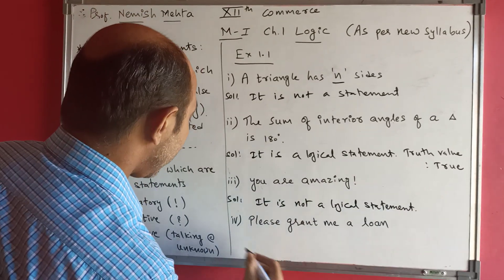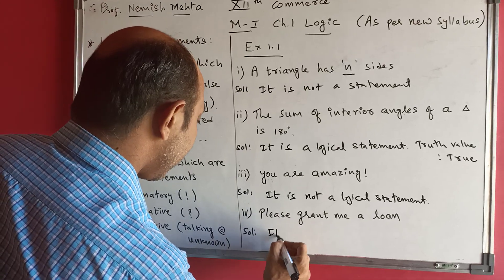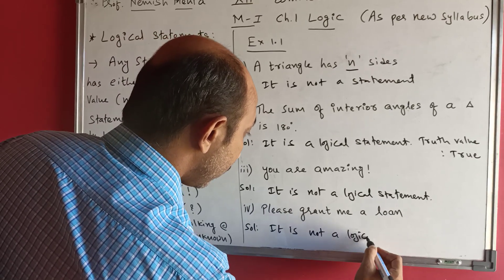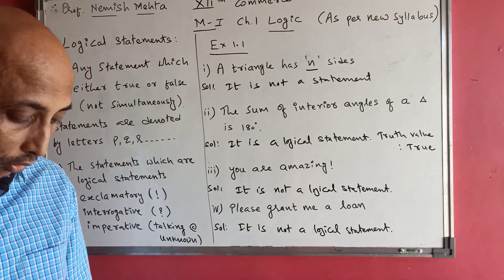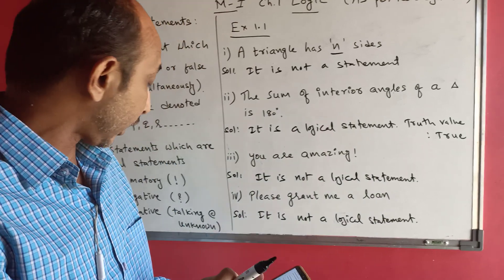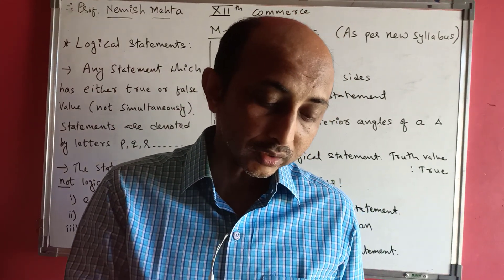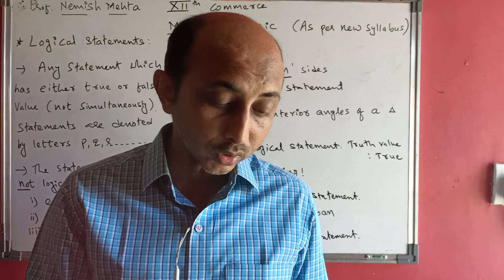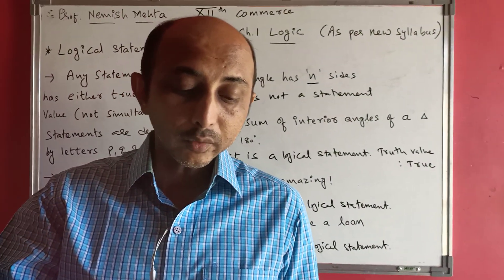Next: 'Please grant me a loan' - it is not a logical statement because it is a request. Next: 'Minus root 4 is an irrational number' - it is a statement and has a truth value. It is actually a rational number so the truth value is false. Question 6: 'x² - 6x + 8 = 0 implies x = 4 or x = 2' - it is a statement and both values are given, so truth value is true.